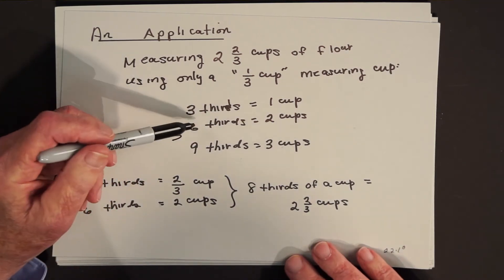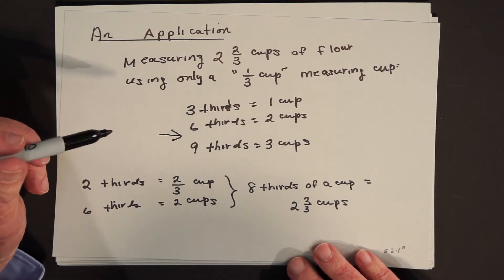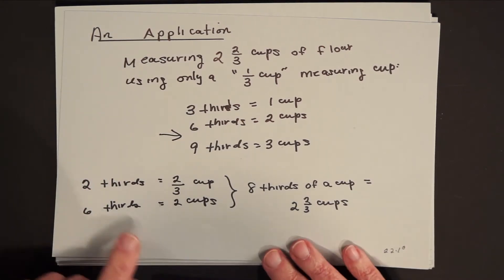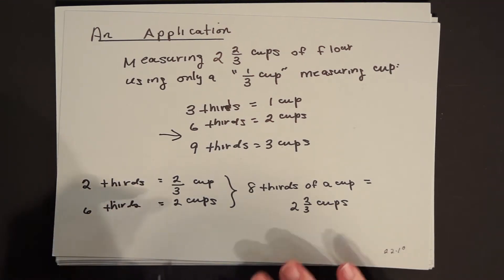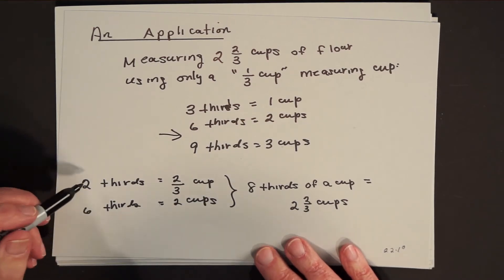And so right away, I know I'm going to have to fill up the one third of a cup measuring cup more than six times, but less than nine times. And to get the answer exactly, what I can say is, two thirds means two of what it takes three of to make a cup. So another way of saying two thirds of a cup is to say two thirds.